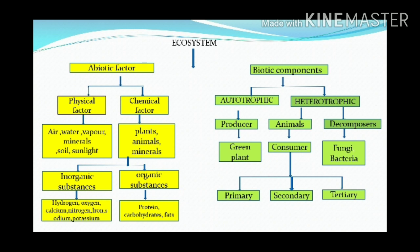Organic compounds include proteins, carbohydrates, and fats. Biotic components are of two types: autotrophic and heterotrophic. Autotrophs are the producers — for example, plants — which produce their own food. Heterotrophs depend on others; they are the consumers and decomposers. Consumers are animals and decomposers are bacteria. Animals are classified into three types: primary consumers, secondary consumers, and tertiary consumers.